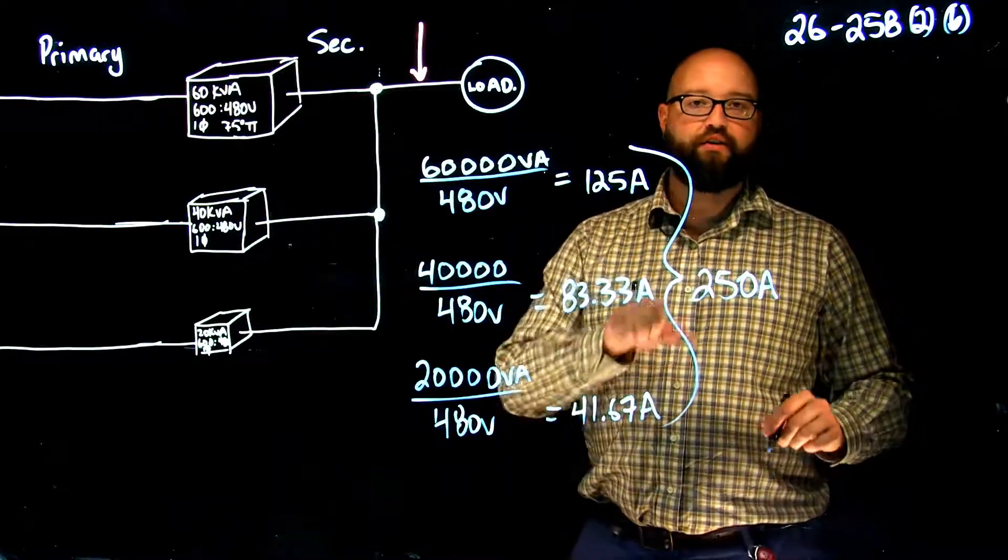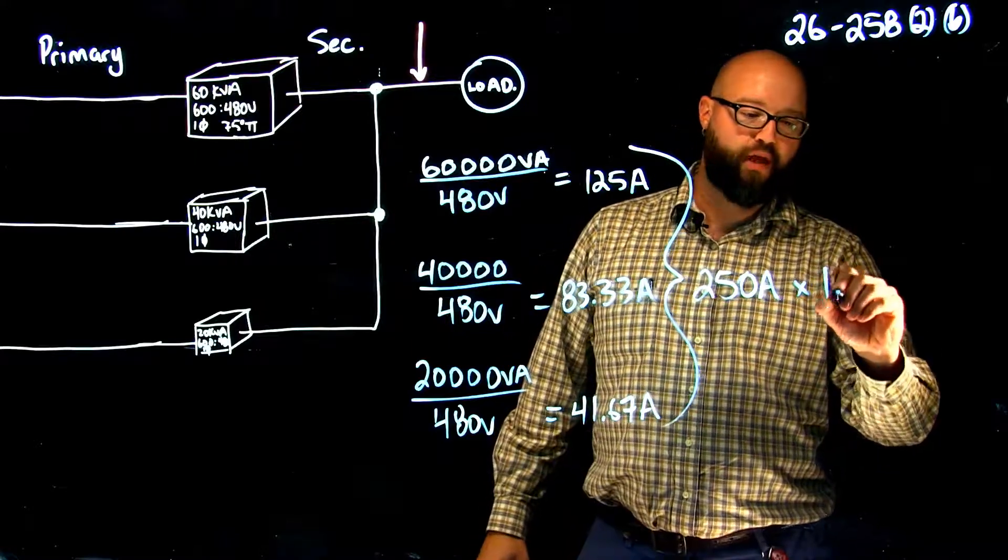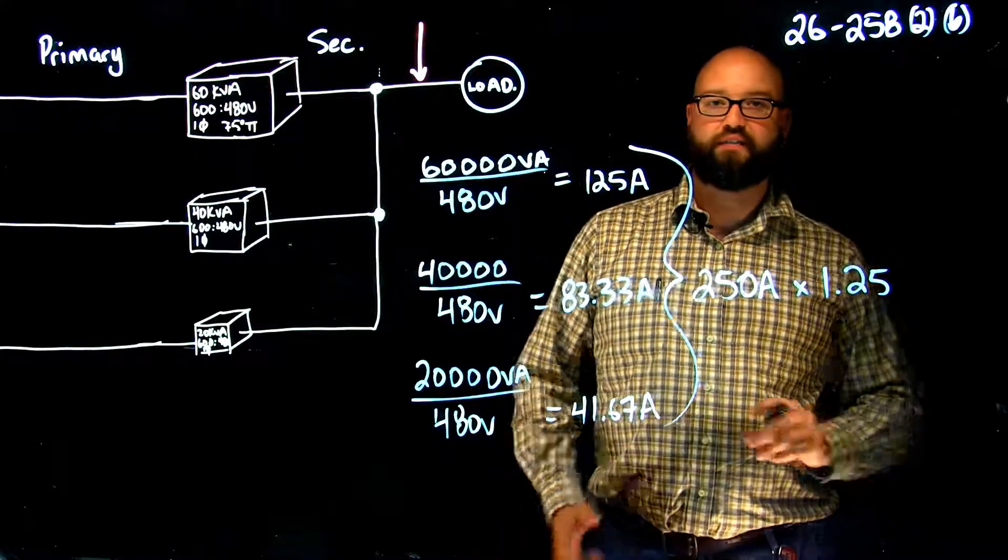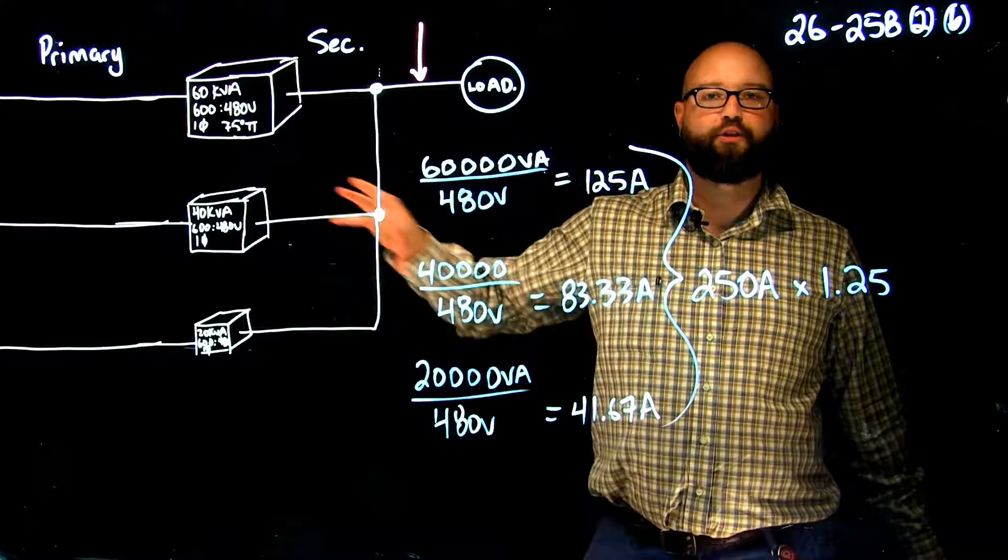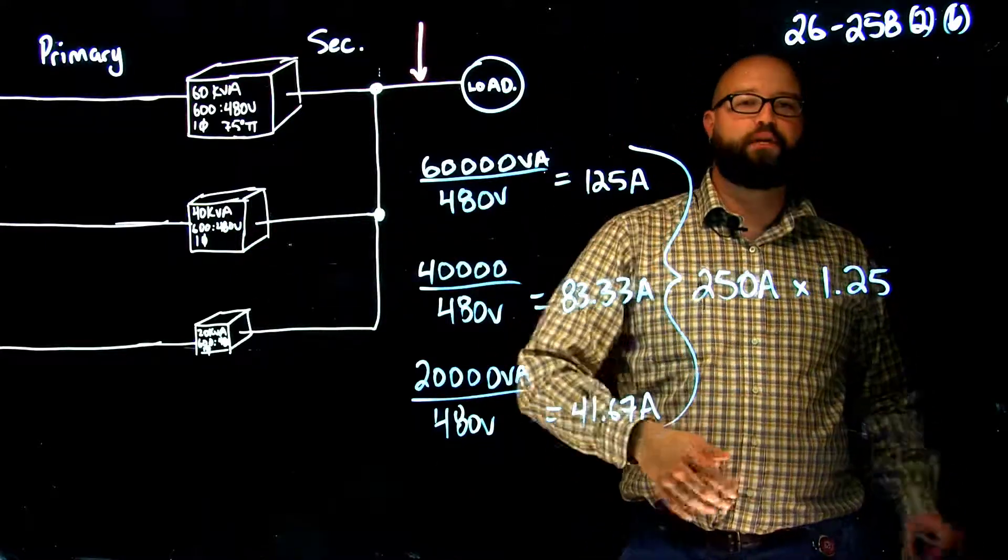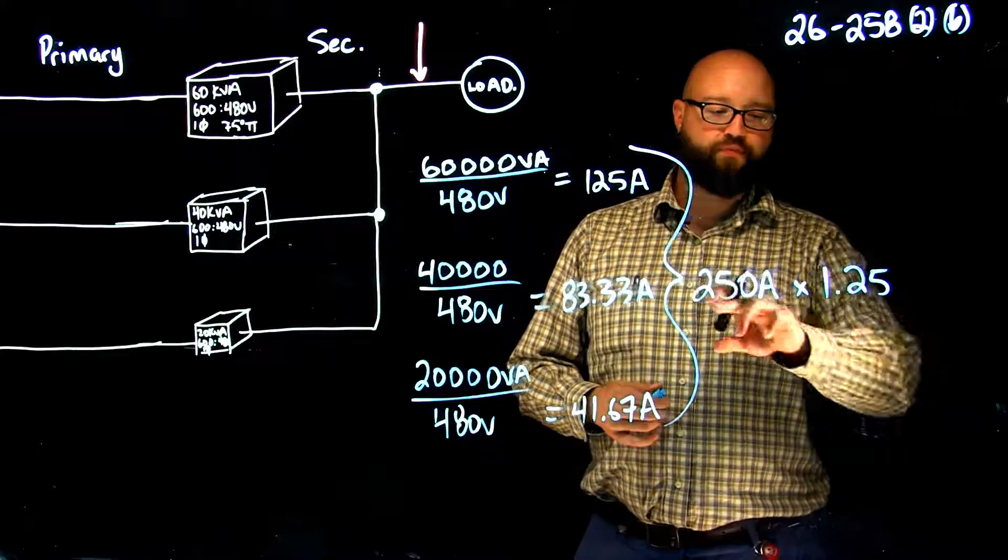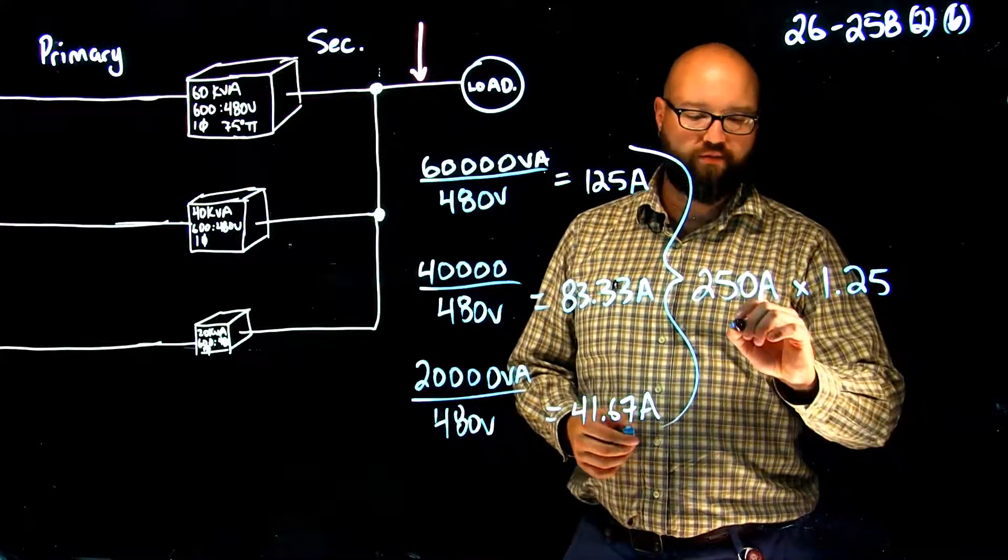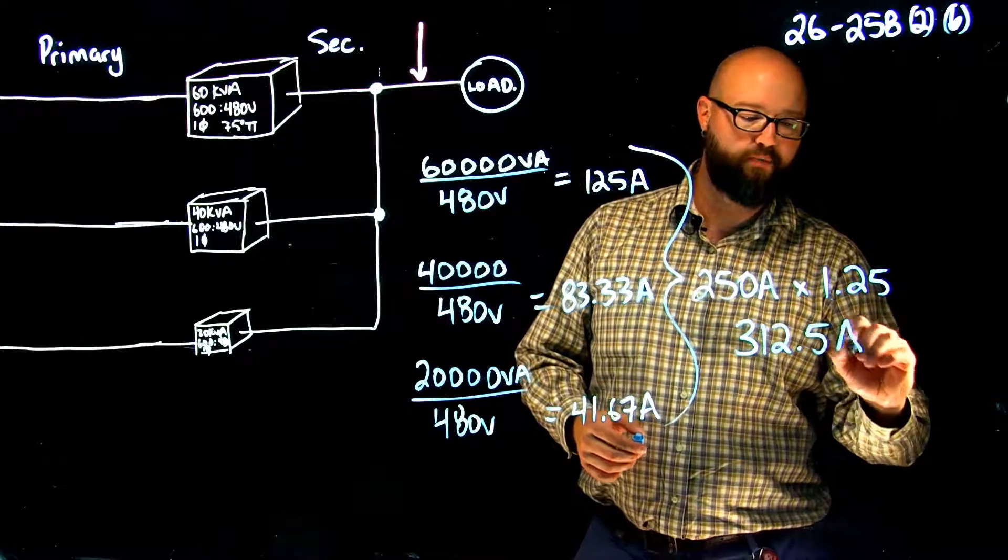Now we're going to take this entire number and multiply it by 1.25, that's the difference between the secondary parallel and the primary parallel. Now we're taking all of these values and putting them at 125%. 250 times 1.25 should give us a number somewhere around 312.5 amps.